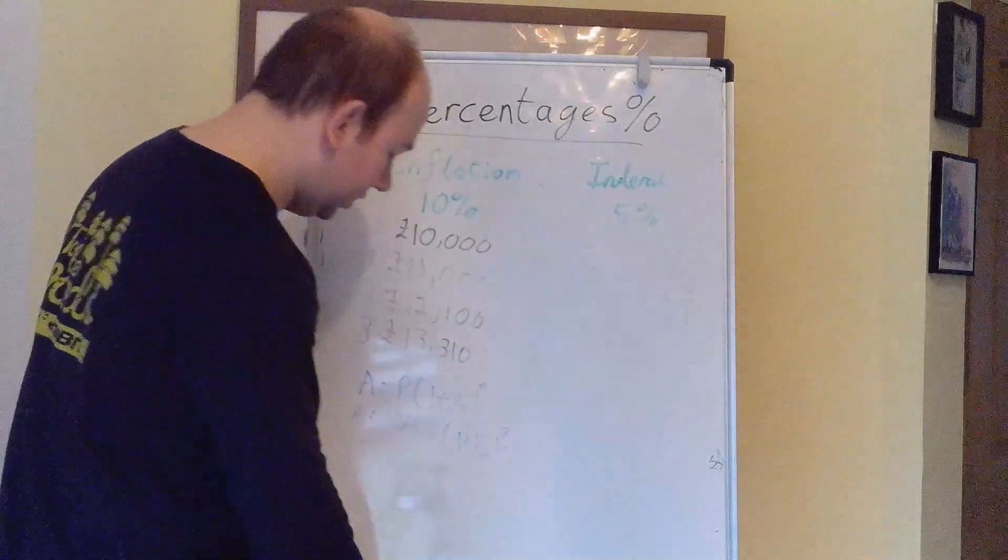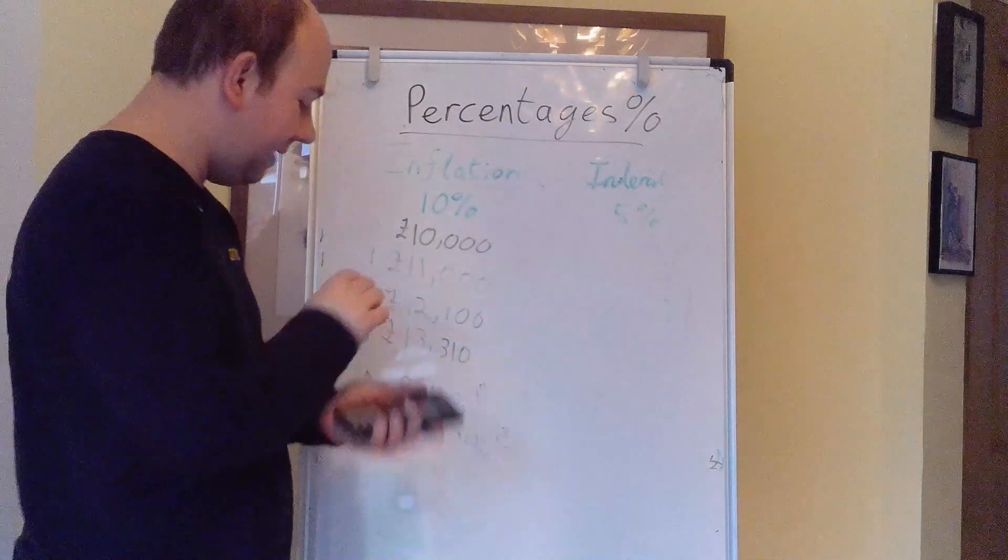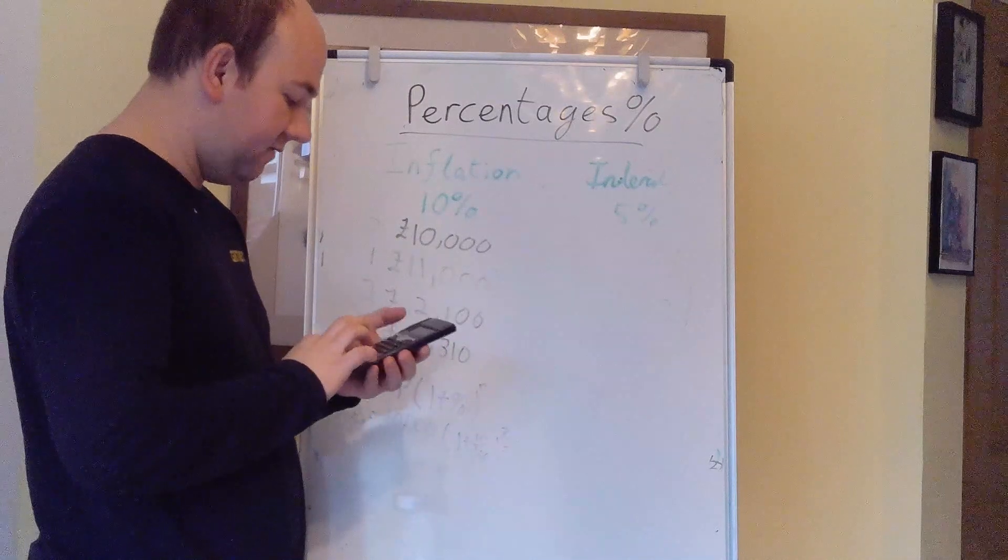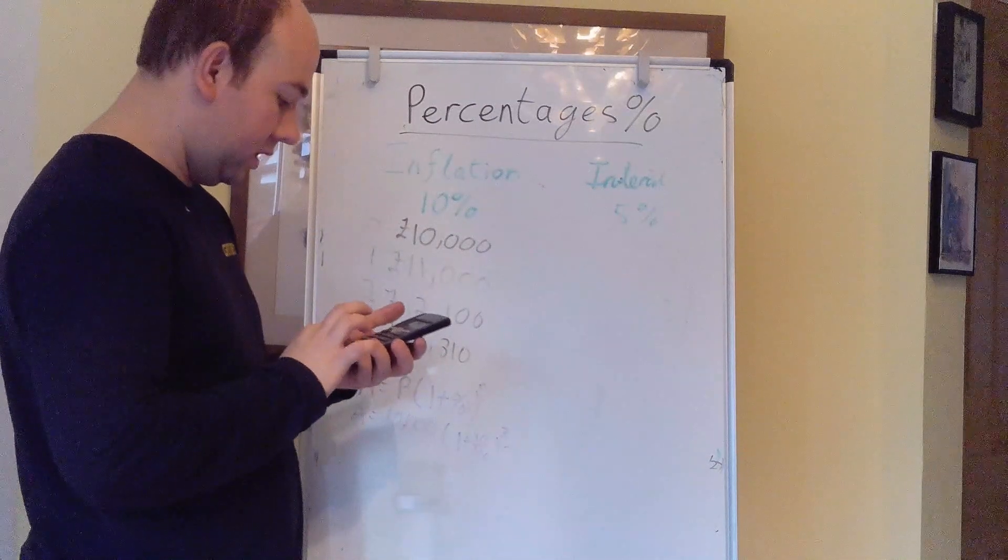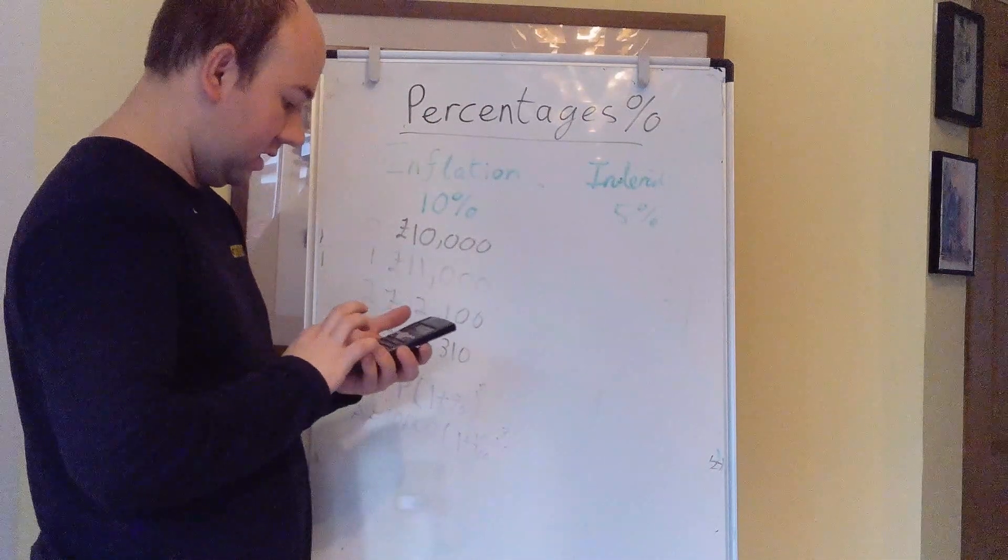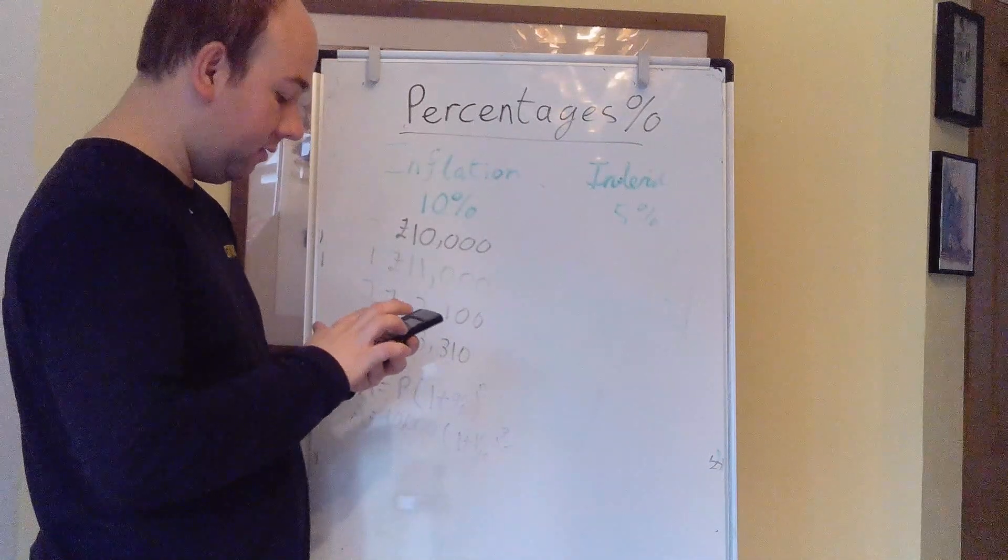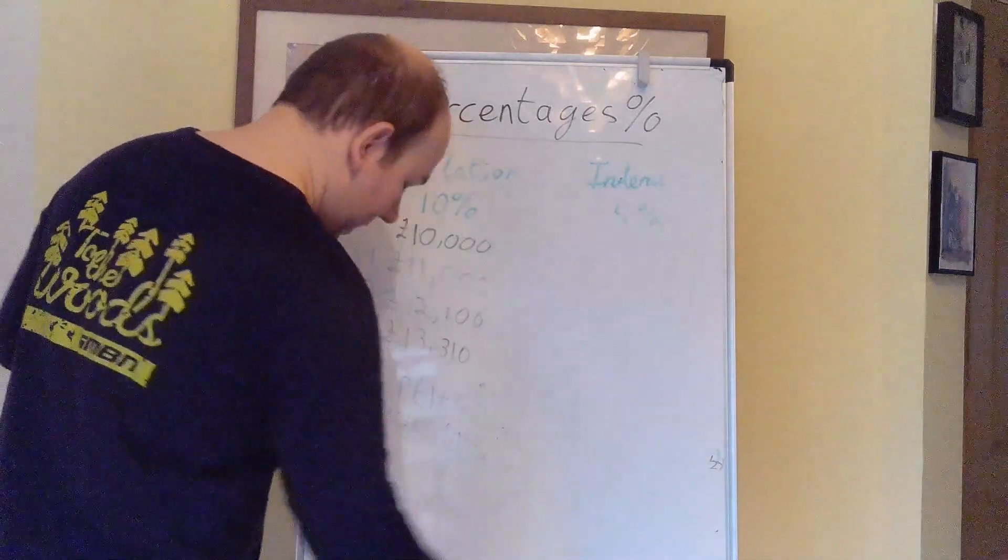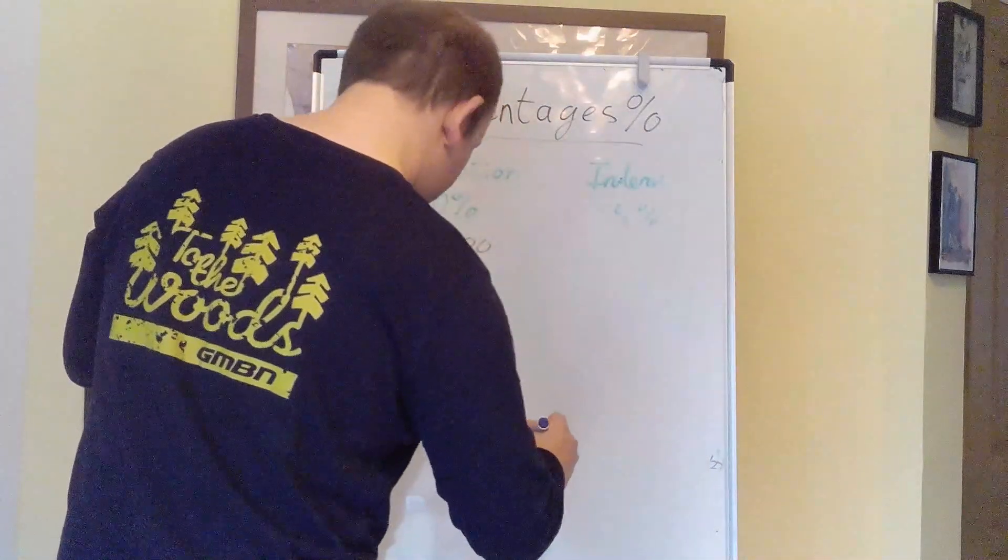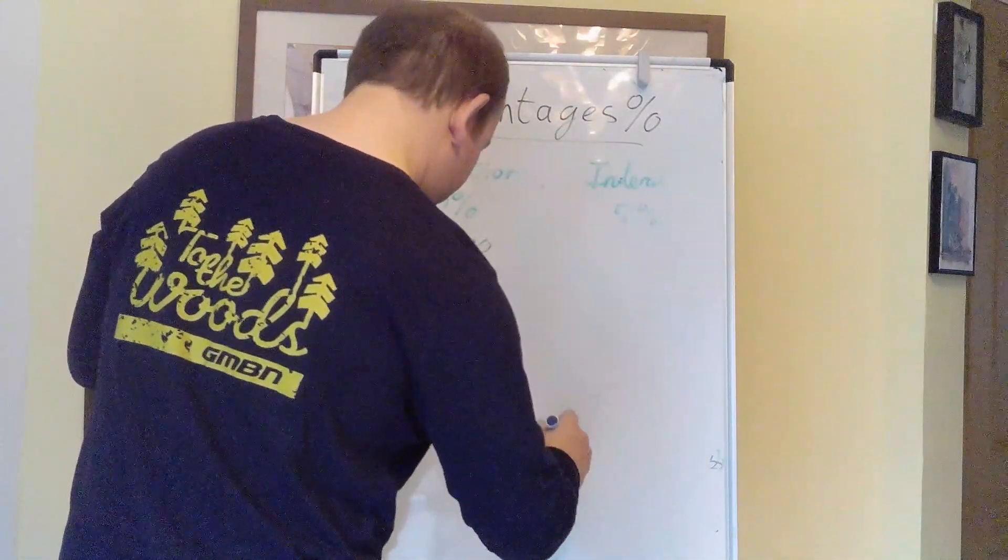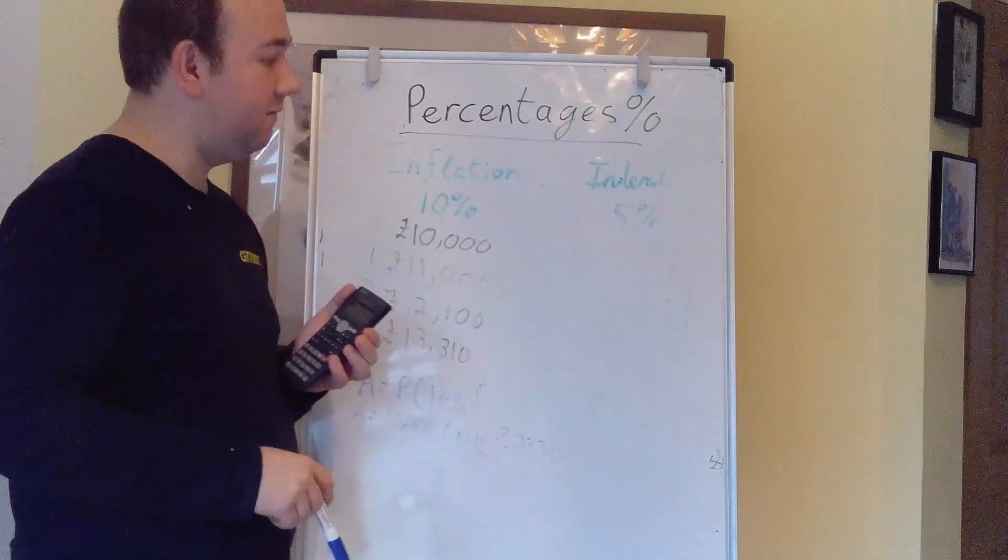The key for this is keeping your brackets sensible. So we've got the 10,000 multiplied in the brackets, 1 plus that 0.1 to the power 3. And the calculator gives this as 13,310. So we've got the same value.